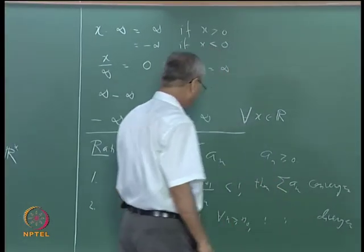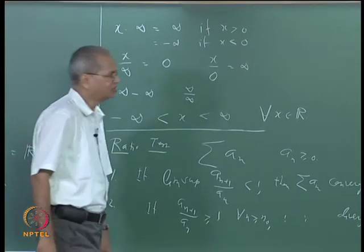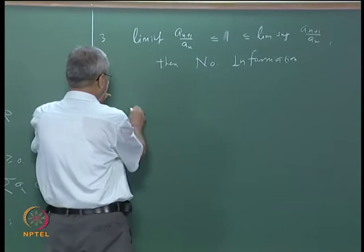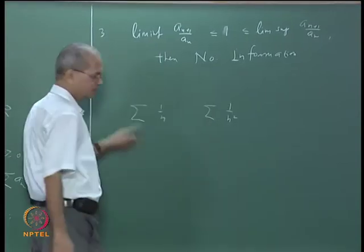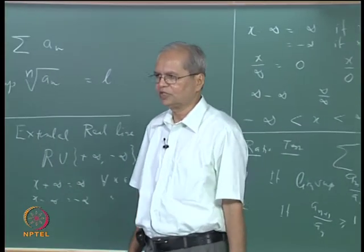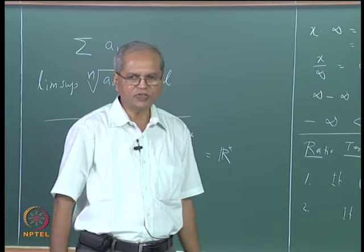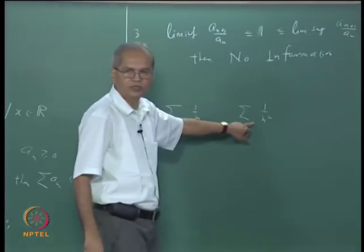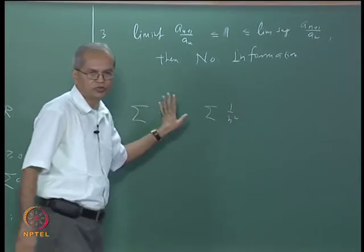As for the proofs, the inconclusive case is trivial from examples we have already seen. For sigma 1/n and sigma 1/n², the ratio aₙ₊₁/aₙ is like n/(n+1) or n²/(n+1)², and the limit is 1. Once the limit is 1, limit inferior and limit superior are both 1. We know sigma 1/n diverges and sigma 1/n² converges, so in this case the test gives no information.